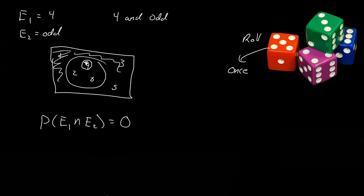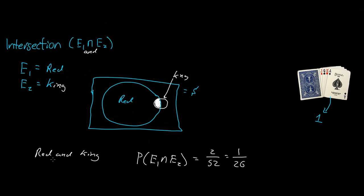And down here, this is getting a red card and a king. So it has to be red and it has to be a king when we have intersections. So it has to fit both events.